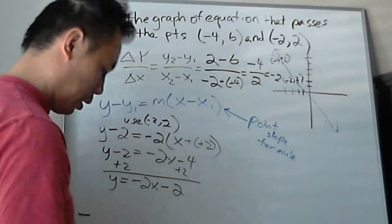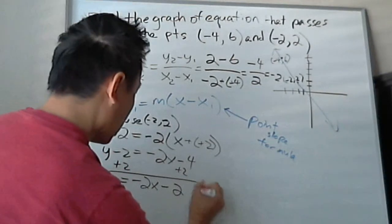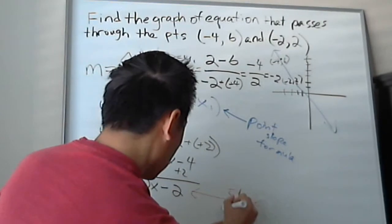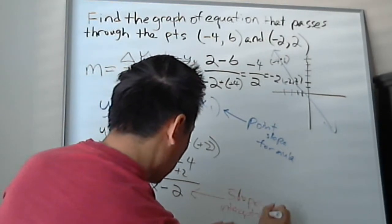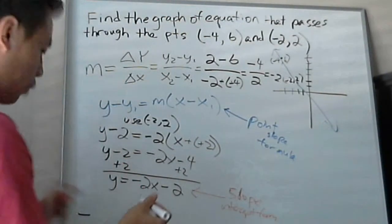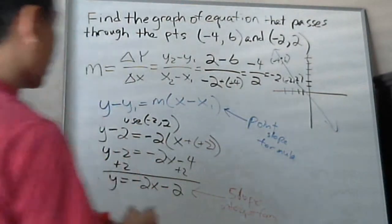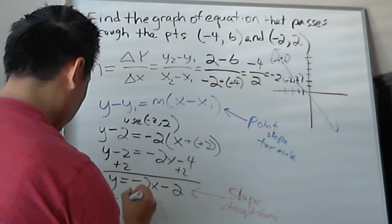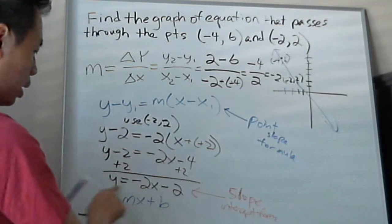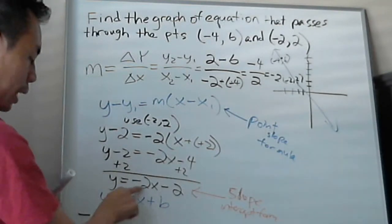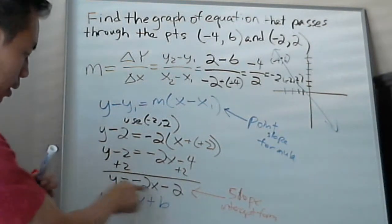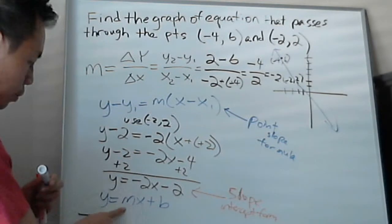And this they call it the slope intercept form. Now some teachers, when they ask for the slope intercept form, it's always in this format. And I'll write it in the blue color so you can see the equations. y equals mx plus b format, they call it. And this is the slope intercept form. y equals mx plus b, which is y equals negative 2x minus 2. So when people ask you, oh, so what's the slope for this equation? All you got to do is see negative 2 in this slope intercept form. The slope is negative 2 because it's m. Remember? m is slope.